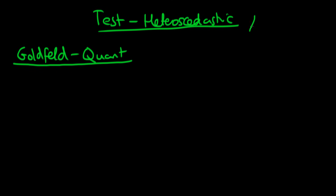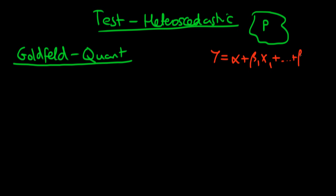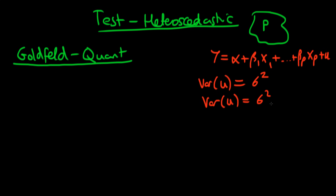Let's remind ourselves what we're testing for. The idea is that there is some population process where y equals alpha plus beta-1 x1 through to beta-p times xp plus some population error u. We're testing that the variance of u is equal to a constant — the assumption of homoskedasticity — meaning the variance of errors is independent of the x variables. This contrasts with heteroskedasticity, where the variance of u equals sigma squared times some function of the x variables.